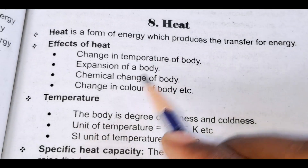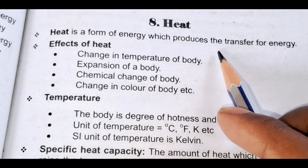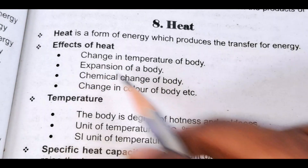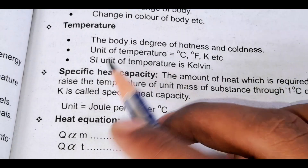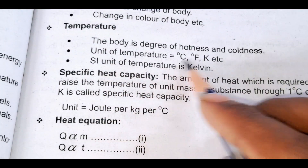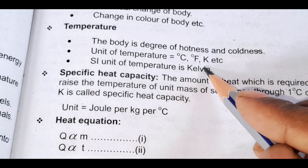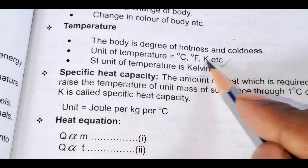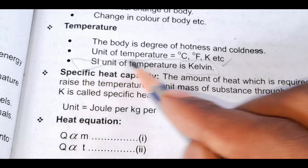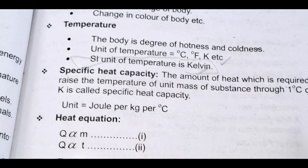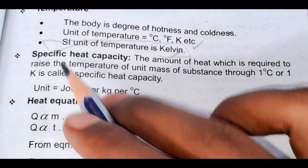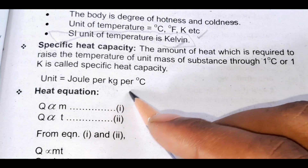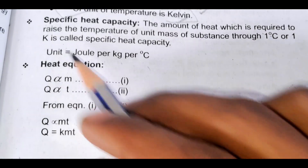Heat is the form of energy which produces the transfer of energy. Effect of heat: temperature. The unit of temperature is degree Celsius, degree Fahrenheit, or Kelvin — the SI unit of temperature is Kelvin. Specific heat capacity, unit: Joule per kg per degree Celsius. Equation of heat.